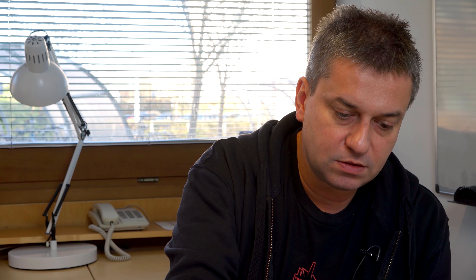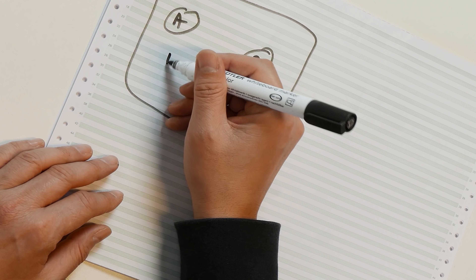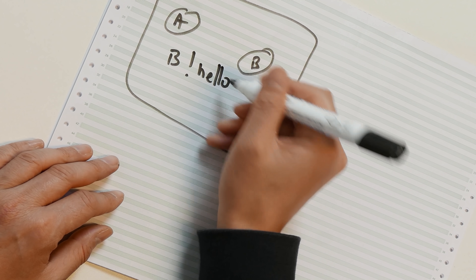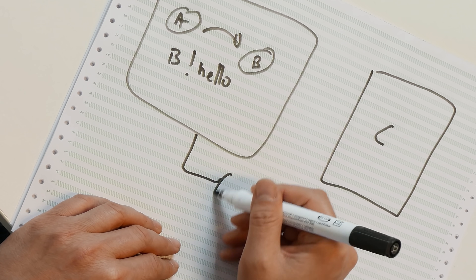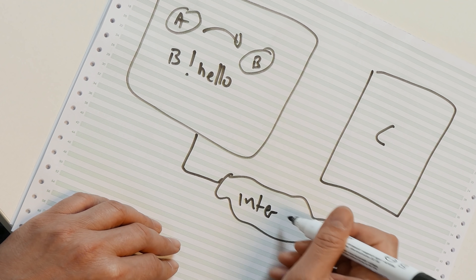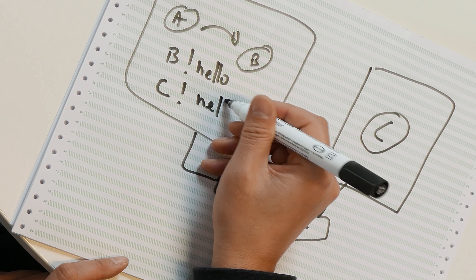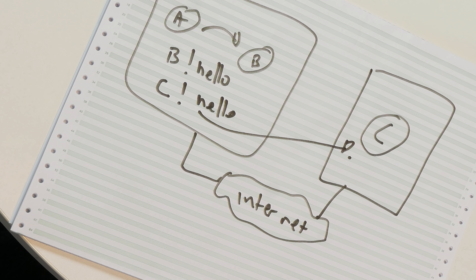We've got two processes running on a single machine — process A communicates to process B by message passing using the exclamation mark syntax, sending 'hello'. Using the same syntax, we could have a process C running on a separate node with a network in between. What process A can do is take the process identifier of C and send it the message 'hello', and this message will be sent straight to C. Being the same syntax, by writing a program that runs on a single machine, with very little changes you can actually distribute it across a cluster of machines without major changes to the business logic.